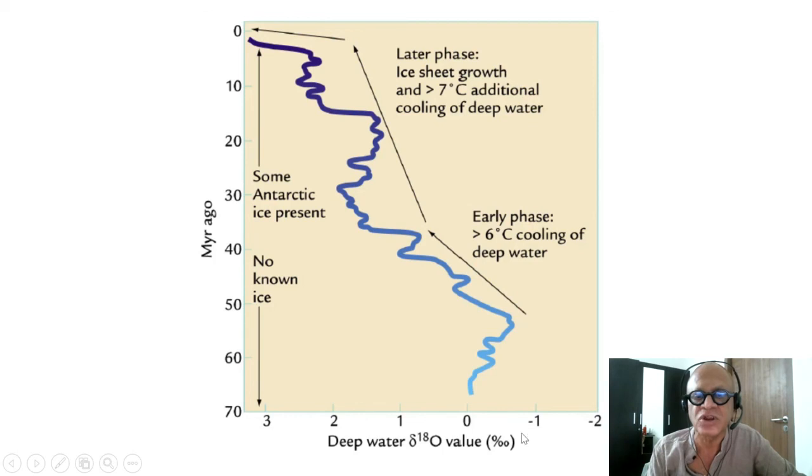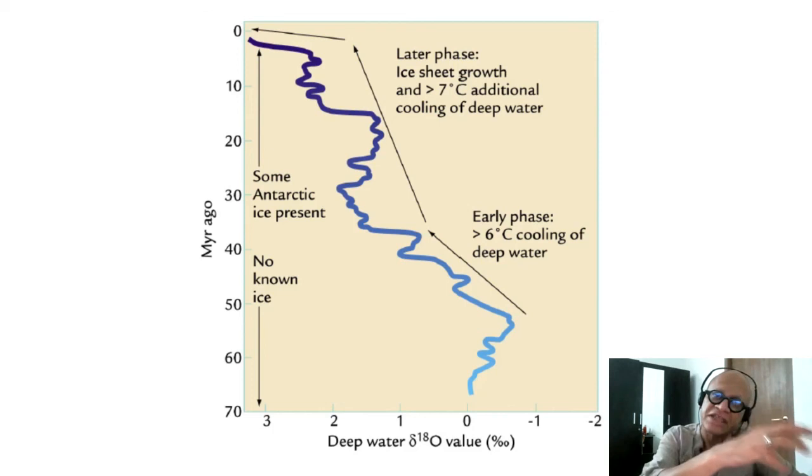Here is a figure from Bill Ruddiman's book. You're looking here at deep water delta O18 values in parts per mil. When you have early phase and cooling, deep water is depleted in O18 because it's been locked up onto glaciers. Then when you have ice sheet growth and greater than seven degrees C additional cooling—this is warmer here, this is colder and colder—you're going to have ice sheet that is going to be... Sorry, deep water that's going to be getting richer and richer in delta O18 because more of the O16 is getting locked up in the glaciers.